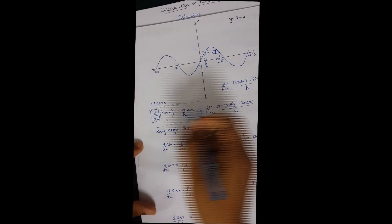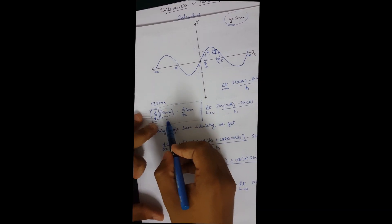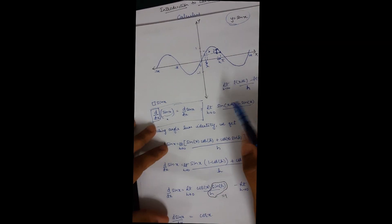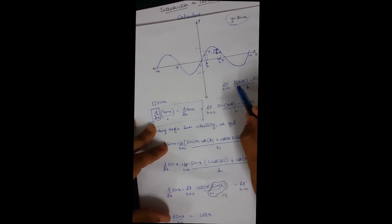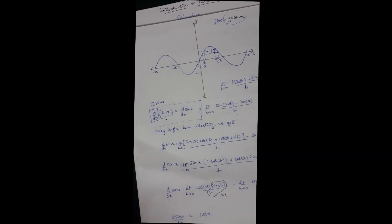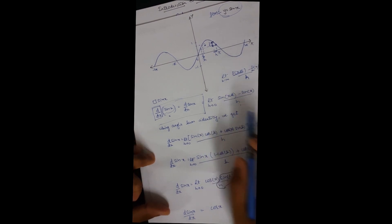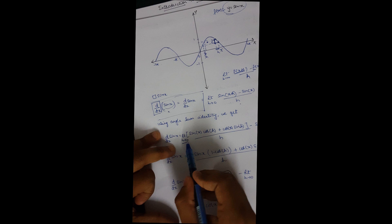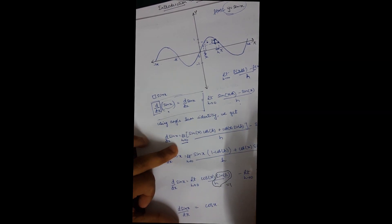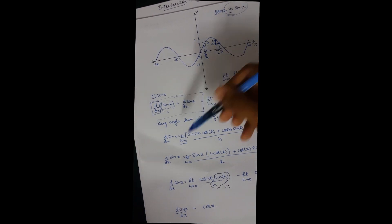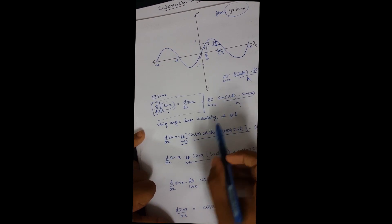Now that we understand d by dx is the slope, let's calculate the derivative of sin(x). The derivative is the slope at every point of the graph. The slope equals limit as h tends to 0 of [sin(x+h) minus sin(x)] divided by h. Always include this limit when solving — do not forget it, because without it the expression makes no sense. Expanding sin(x+h) using the identity sin(A+B) equals sin A cos B plus cos A sin B: